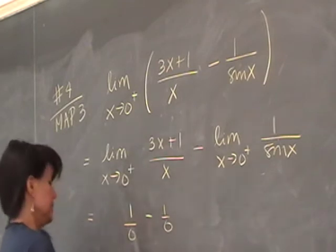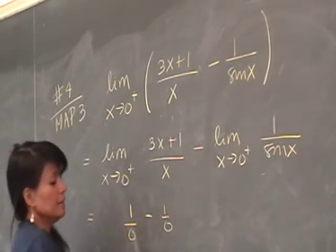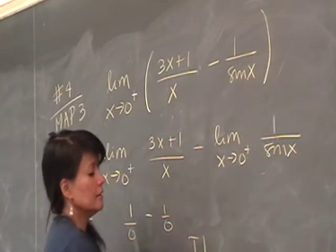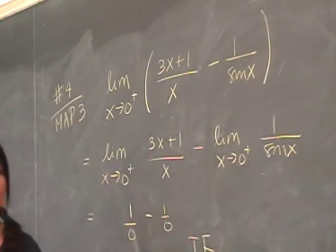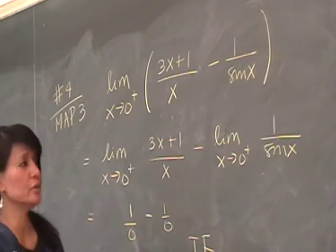1 over 0 minus 1 over 0 is infinity. It's infinity minus infinity, which is an indeterminate form. So therefore, this is an indeterminate form, and what do you think we should do?